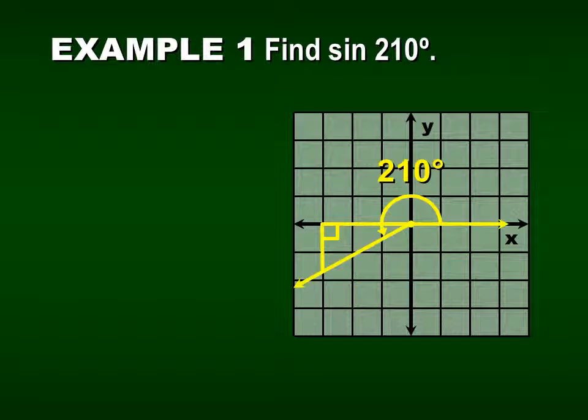If I know that this piece is 180 and the whole thing is 210, that tells me my reference angle is 210 minus 180, which is 30. So I've got a reference angle of 30, which means I have a 30-60 special triangle. In a 30-60-90 triangle, the hypotenuse is 2, the side across from 30 is 1, and the side adjacent to 30 is the square root of 3.